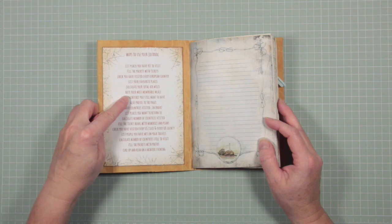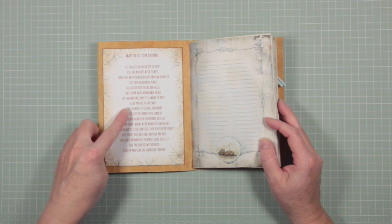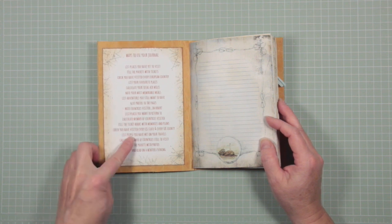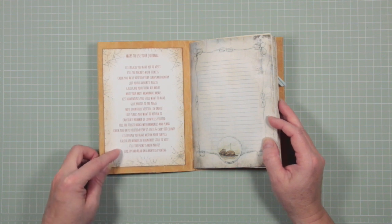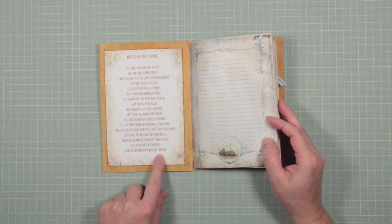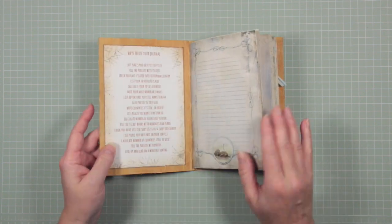And so in the suggestions, I've put things like fill the pockets with tickets, note your most memorable meals because she also likes eating out, note the countries you have visited in order, I think that will be a difficult one for her, list the people you've met on your travels because I know she and her partner have met many, fill the pockets with photos, curl up and read on a winter's evening. And that last bit is, I think, for me, it's one of the reasons why I like to make books and keep books.